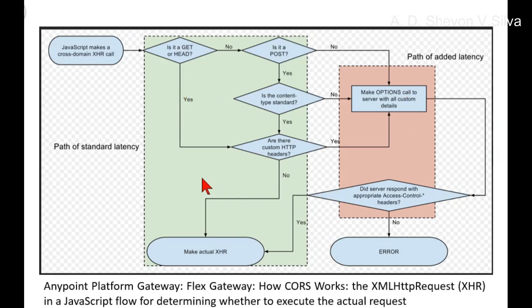If the preflight response is correct and complete, then the client library executes the actual request, which includes certain CORS headers. The client library then validates the CORS headers of the response. If some of the required headers are missing, then the client library is obliged to block the response from reaching the client, which is usually a webpage.